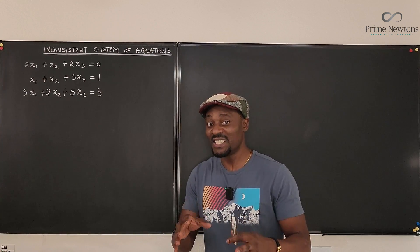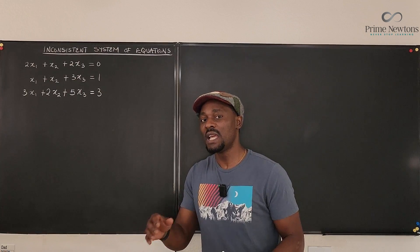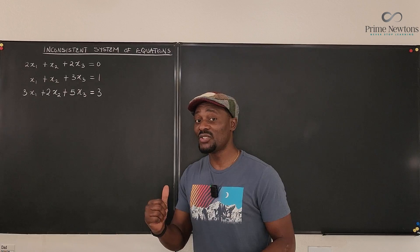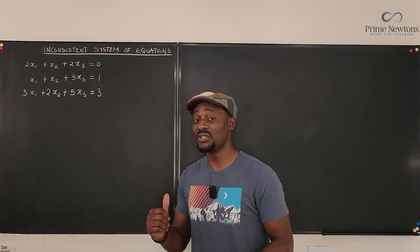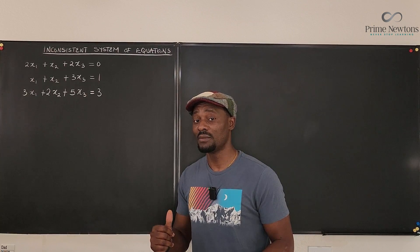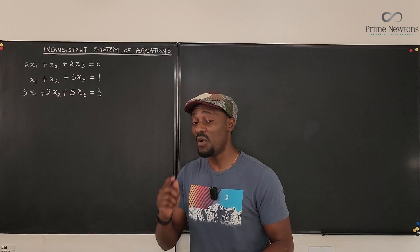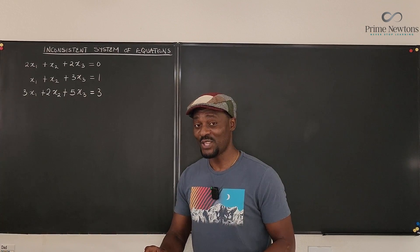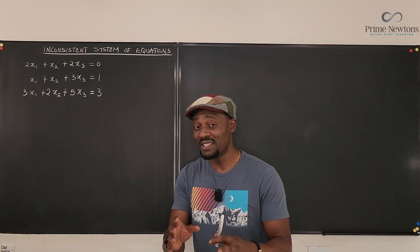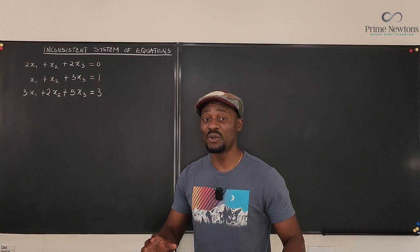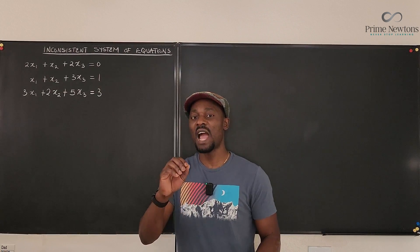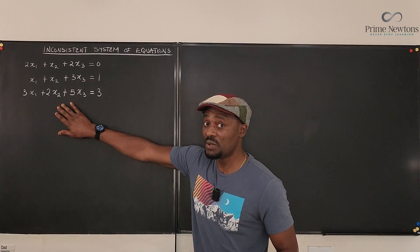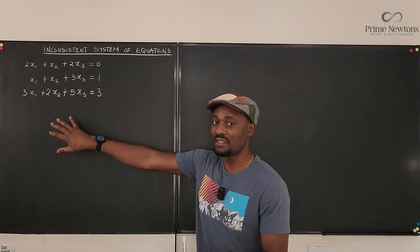What does inconsistent system mean? It means that you're lying — because yesterday you told me x equals 1 and today you're saying x equals 2. x cannot be 1 and at the same time be equal to 2. So that's what inconsistency means, and any system of equations that features that has no solution. This system we have here has no solution and I want to show you how to detect it.